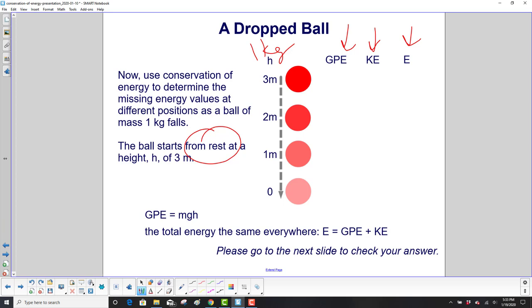So give this a shot and we'll go to the next slide to check your answer. But let's start this for you. At the top, what's your kinetic energy? Zero. It's not moving. What's your total energy? Okay, hang on. We're not going to do that just yet. But let's find your GPE. GPE will be mass, one, times g, which is 10. So we have 10 times the height, 30 joules.